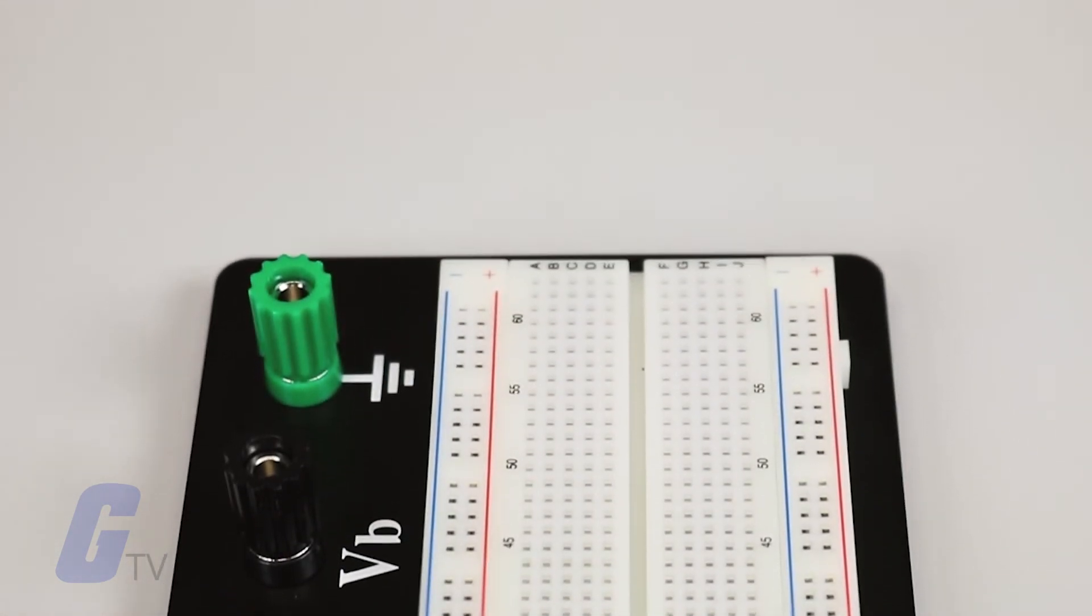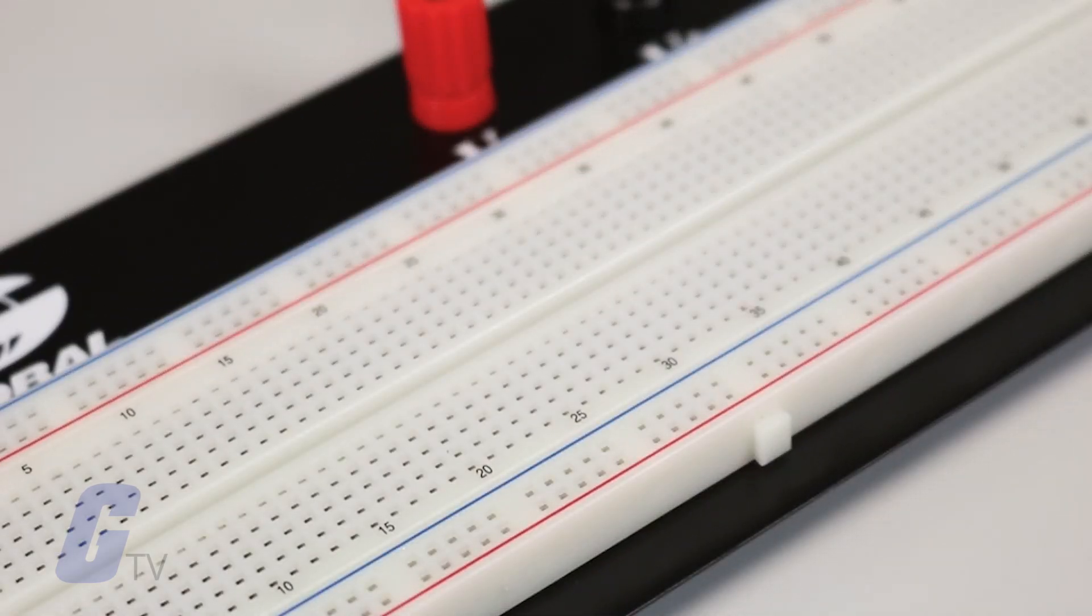Some, but not all of the holes, are connected. The buses are connected vertically so all of the negative bus holes are connected to one another in a series vertically and all of the positive bus holes are connected to one another in a series vertically.